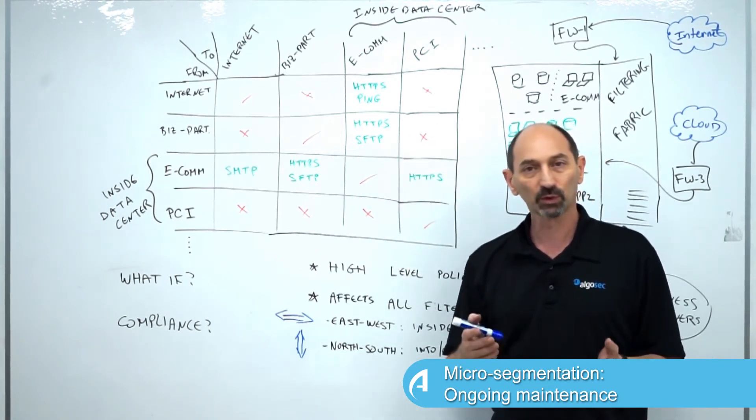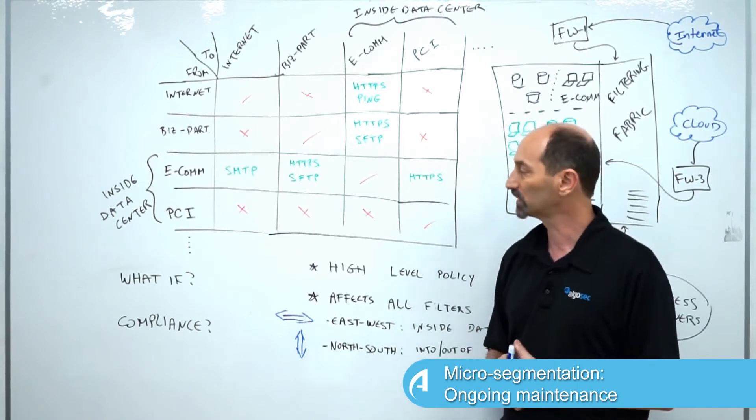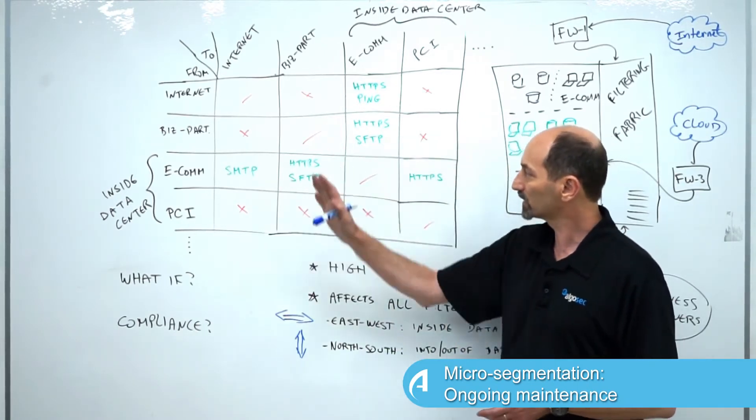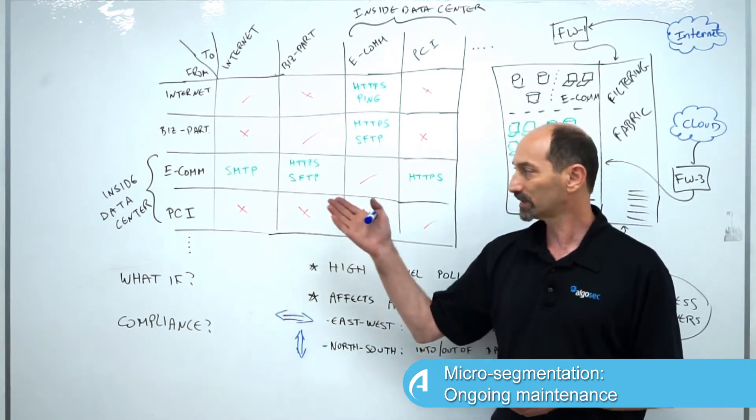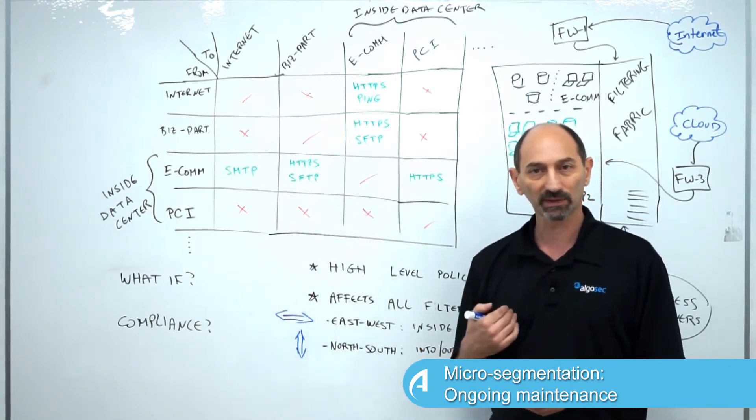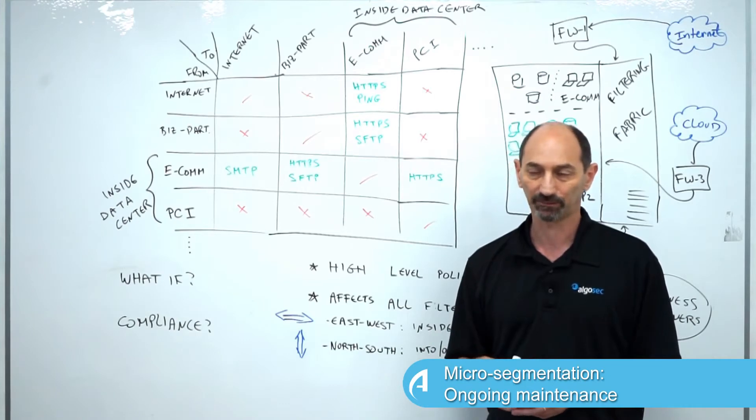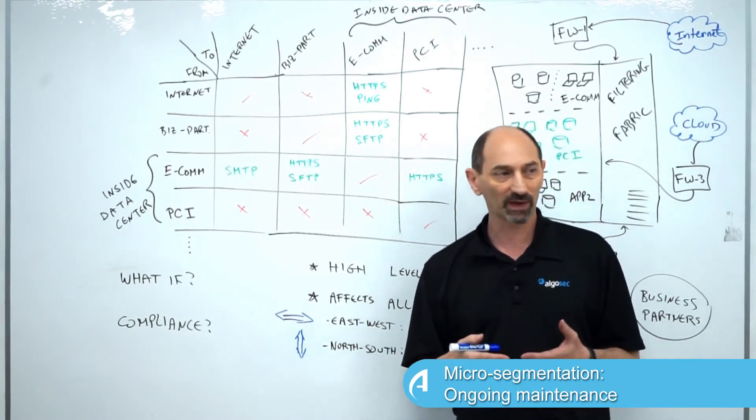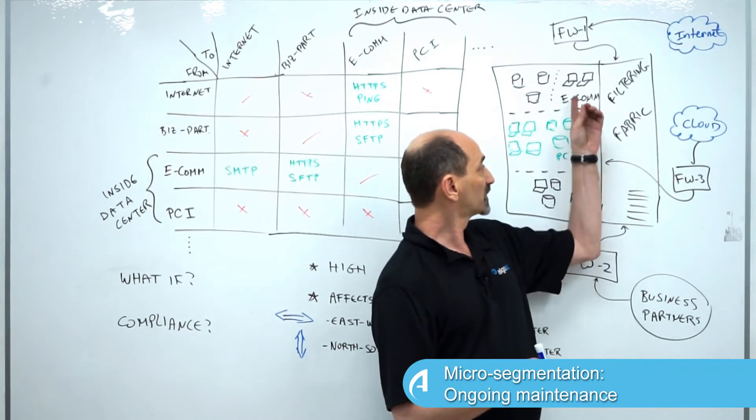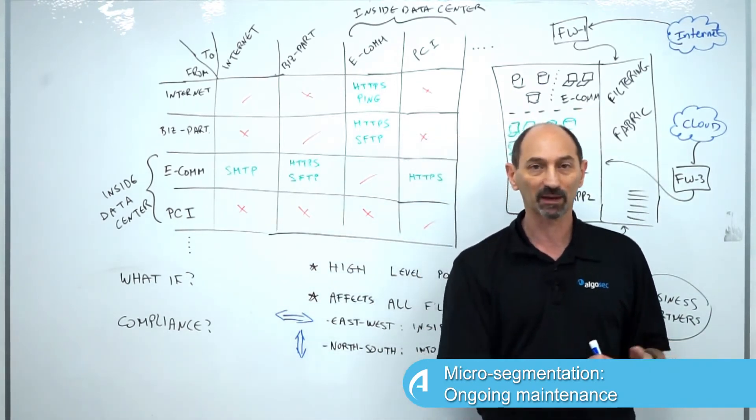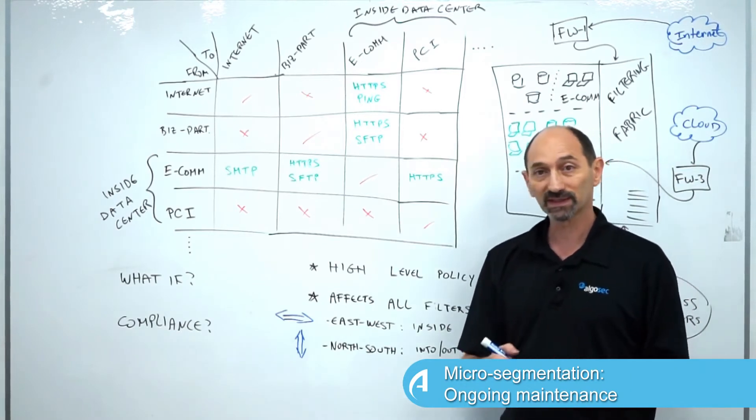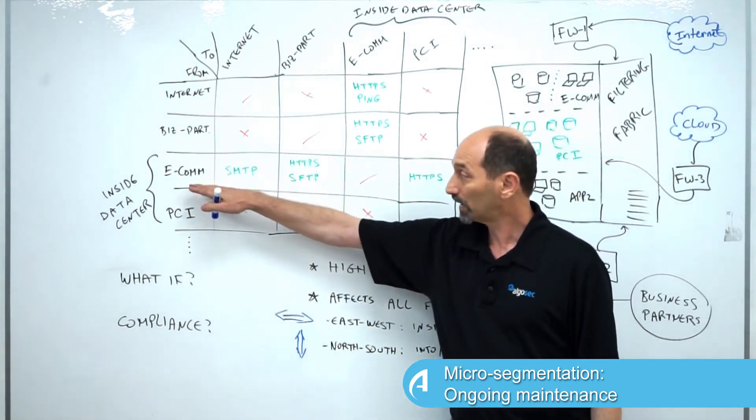Conversely, if the service that's being requested is different from what's legitimately pre-approved, then it's an exception and somebody needs to make an informed decision. This is the way many information security teams work. How does this match the micro-segmentation project that we've been discussing?